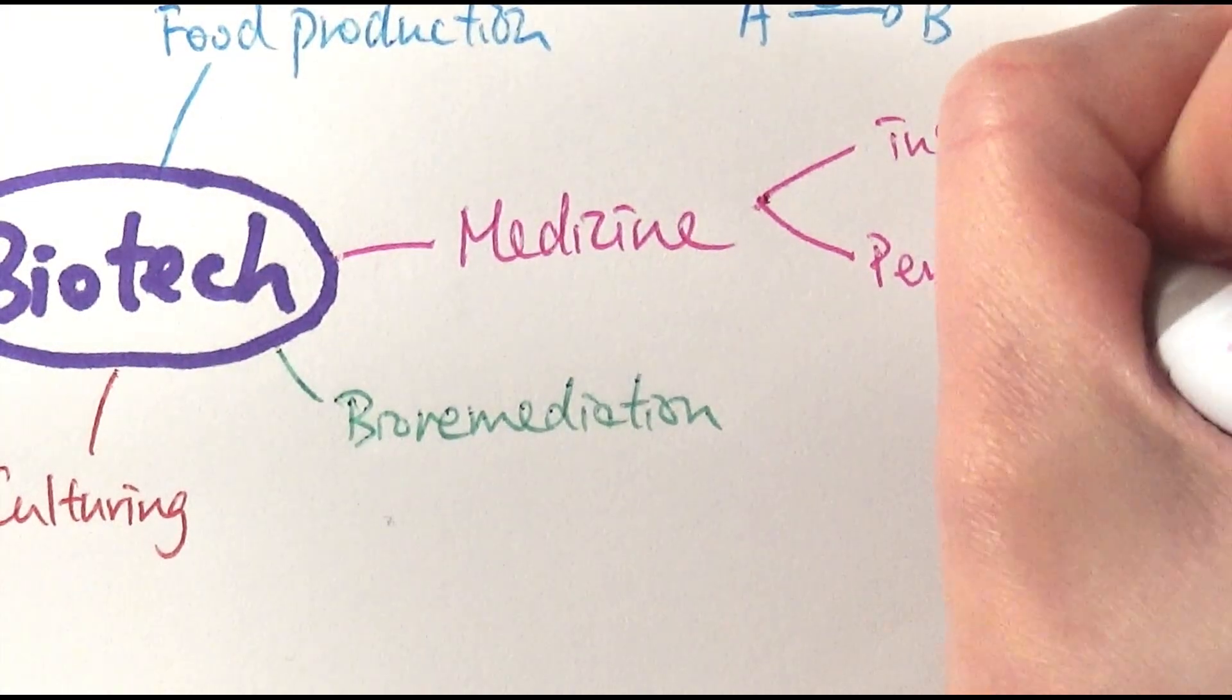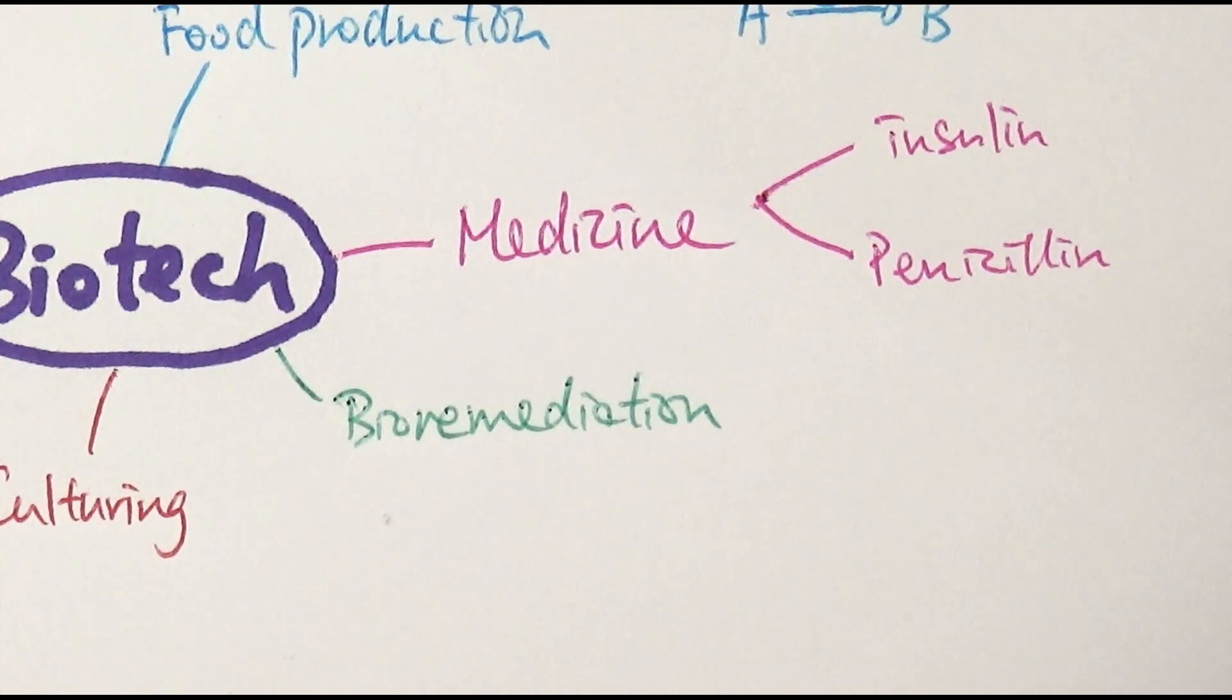The other example would be penicillin, knowing that it's made from fungi and it is a secondary metabolite that is produced from the growth of fungi. Linking a lot to culturing actually, these are the two examples of medicine in biotechnology, relying on microorganisms to make stuff.